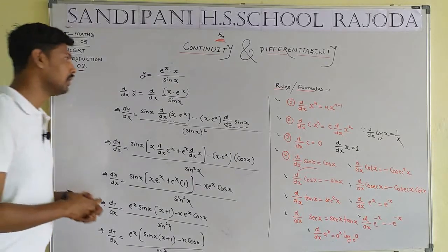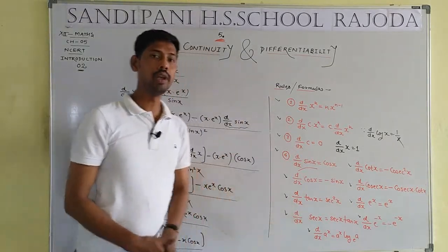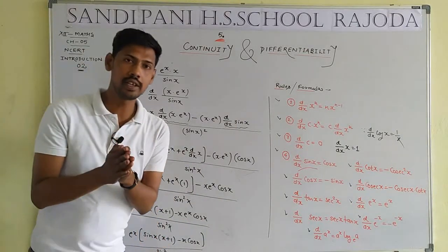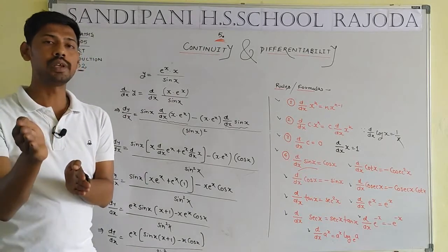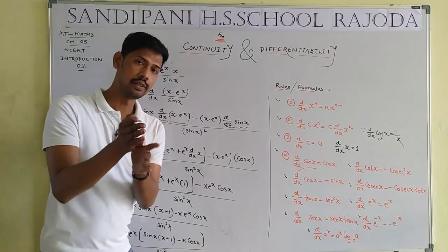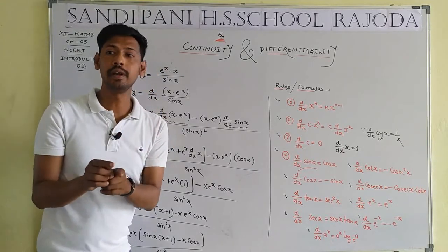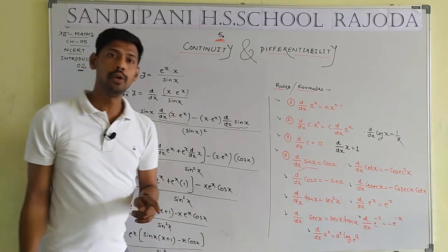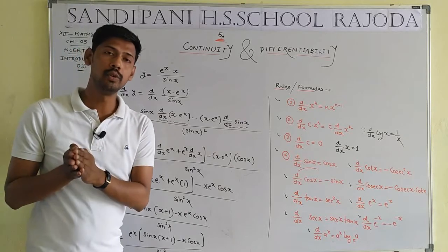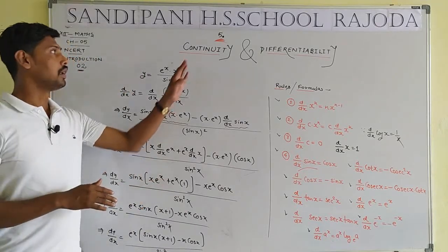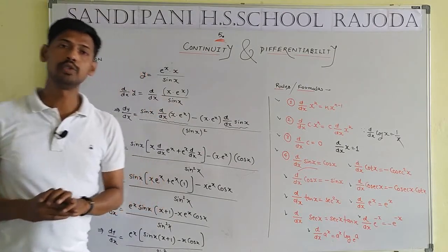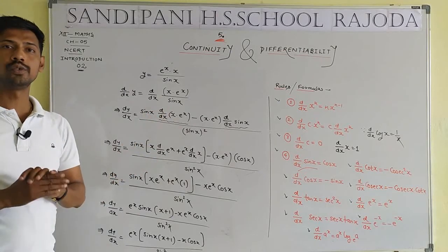Let me recall what we learned today. The product rule: d/dx(first · second) = first · d/dx(second) + second · d/dx(first). The quotient rule: d/dx(numerator / denominator) = [denominator · d/dx(numerator) − numerator · d/dx(denominator)] / denominator². I hope you got the proper solution for today. I am Asim Kumar Mandal. Thank you so much for watching this YouTube channel of Santipani School, Rajoda.